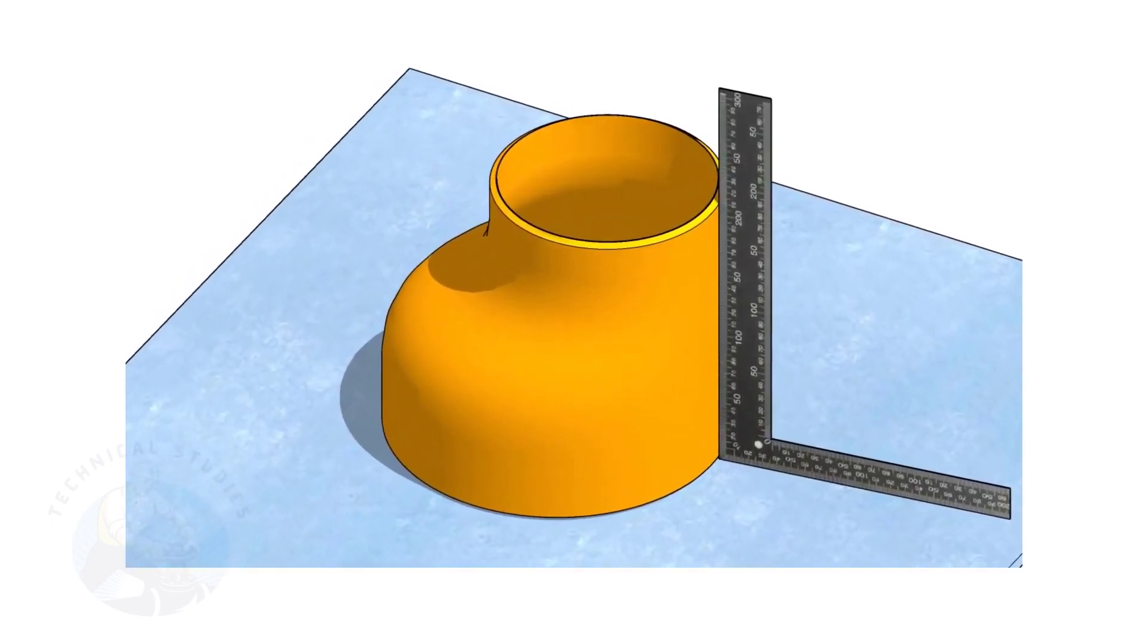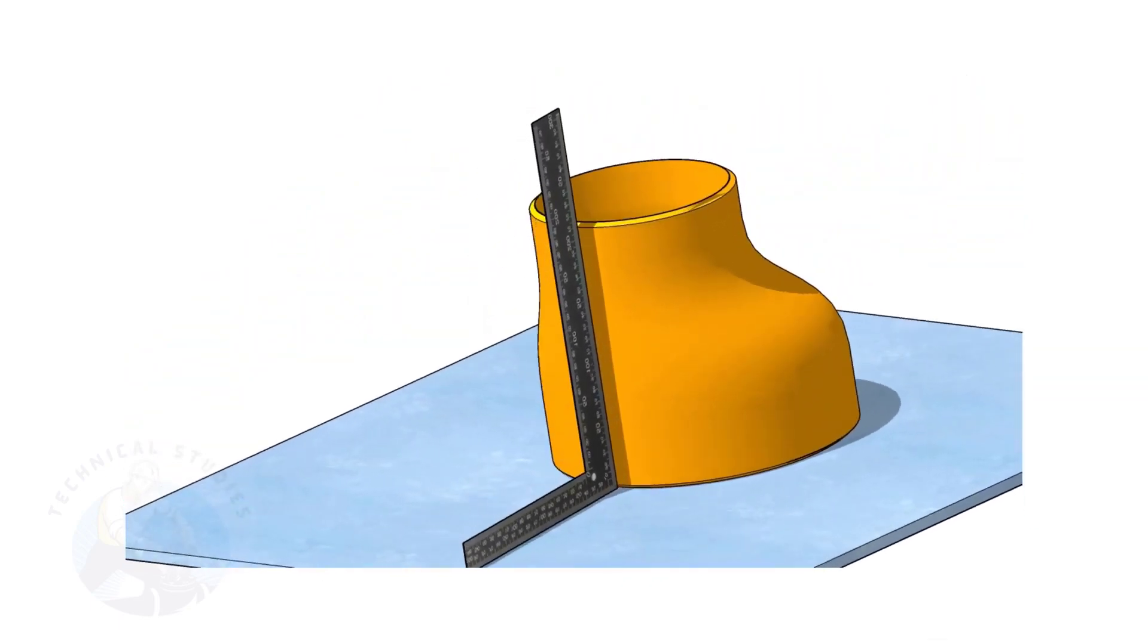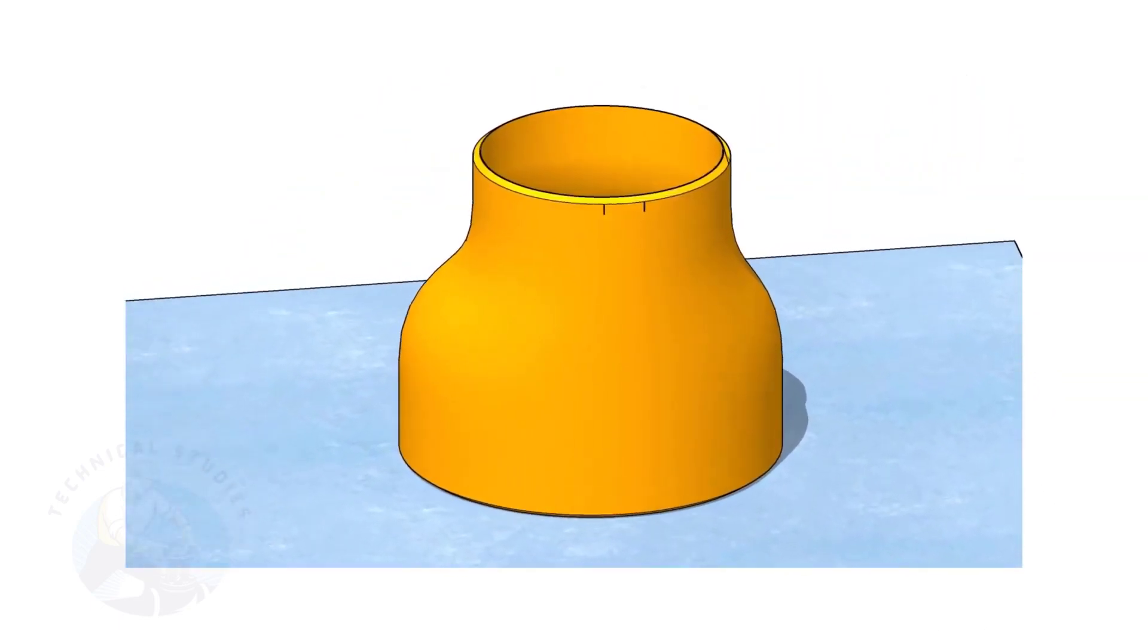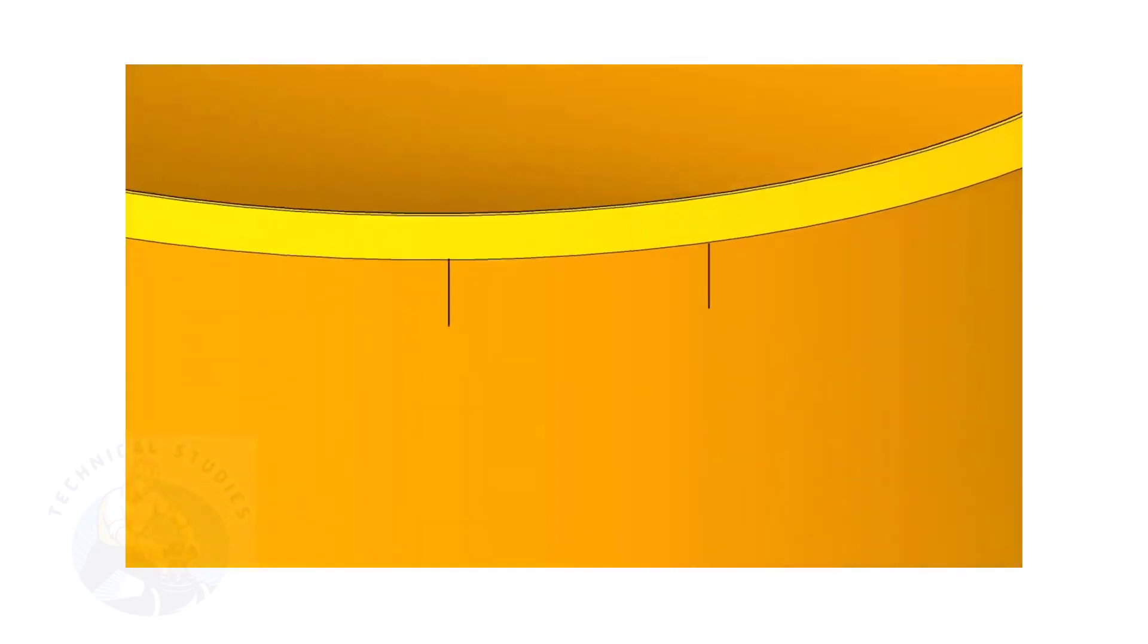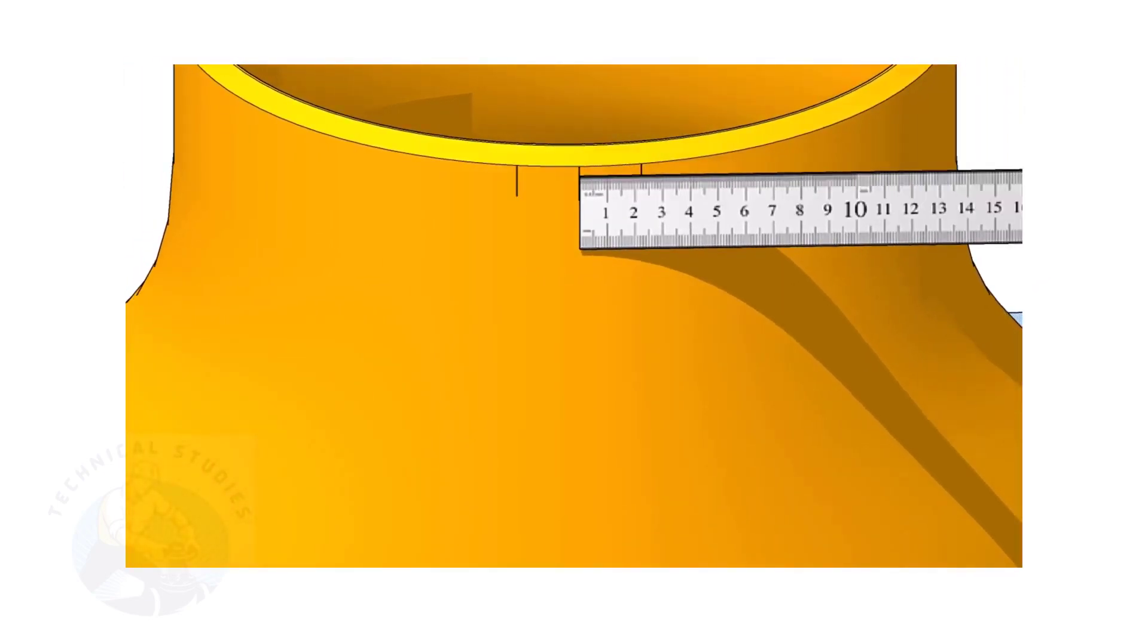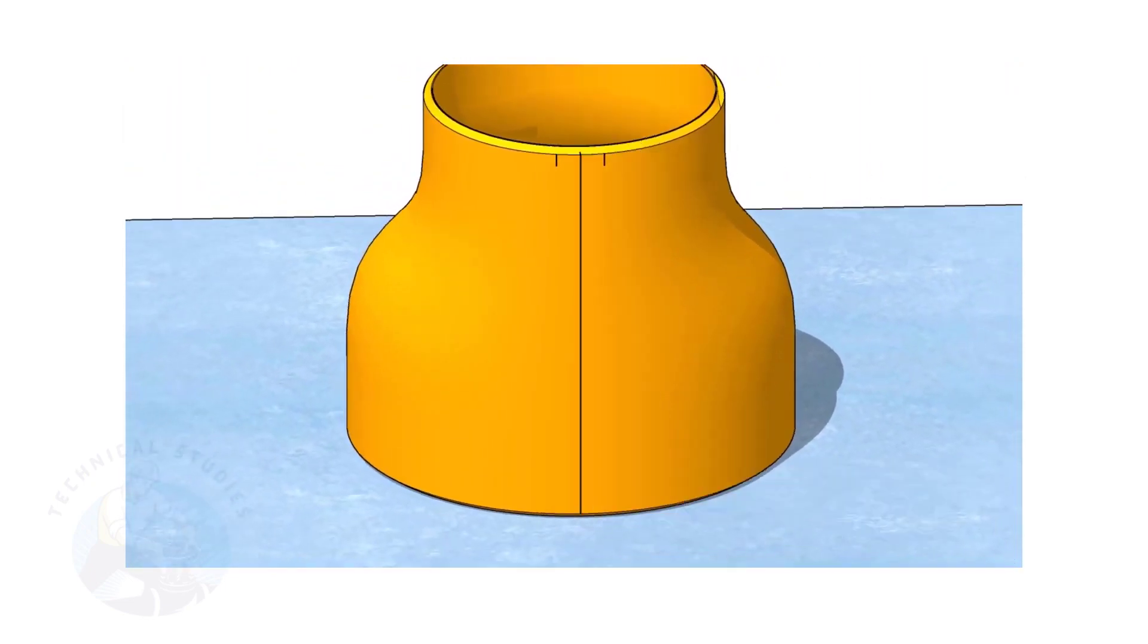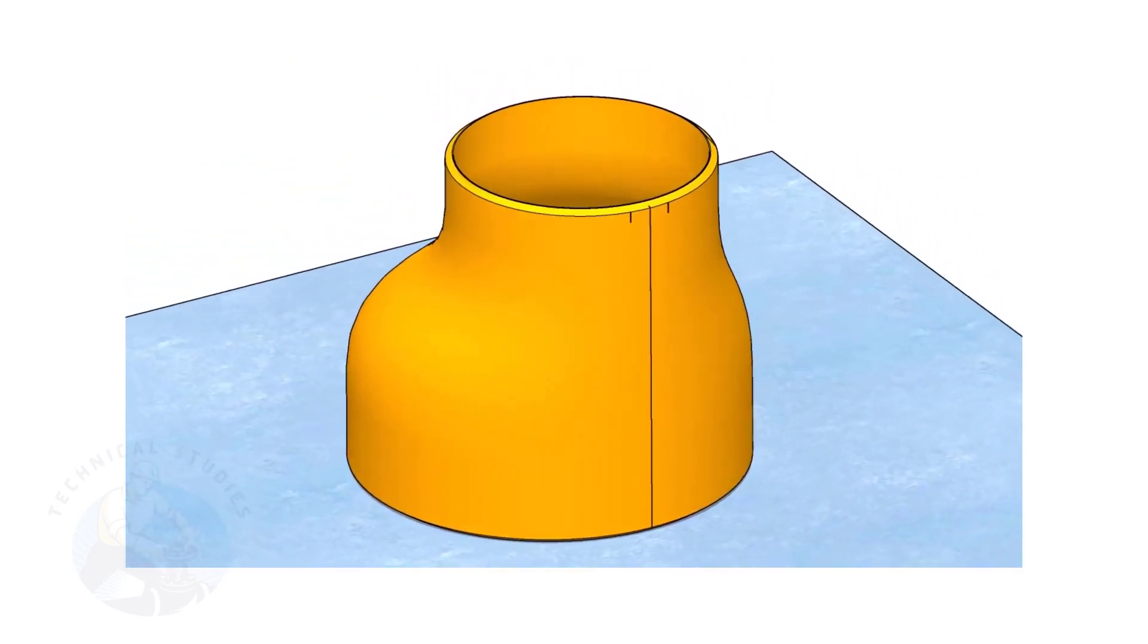It is good practice marking the center lines of the fittings before starting the fit up, especially an eccentric reducer. I have already posted videos on how to mark the center lines of an eccentric reducer in different methods. In this video, I will show you the method of fitting an eccentric reducer to a pipe that is already fitted to a flange.